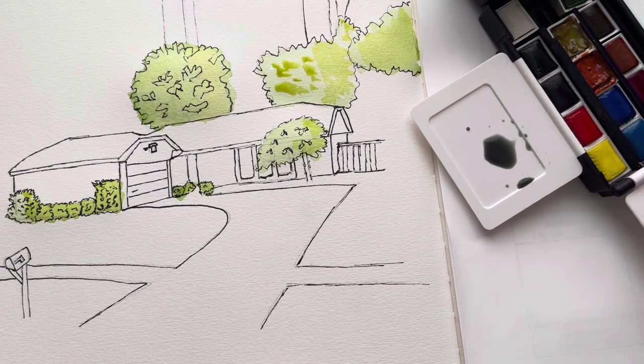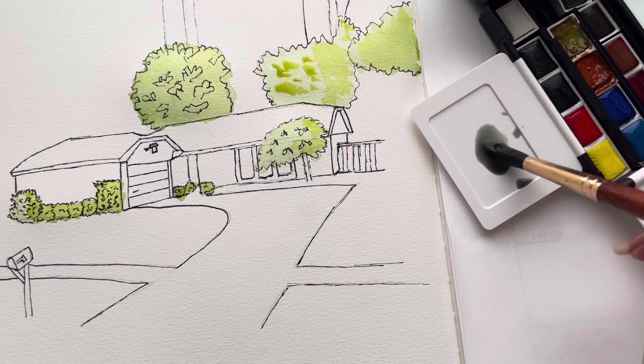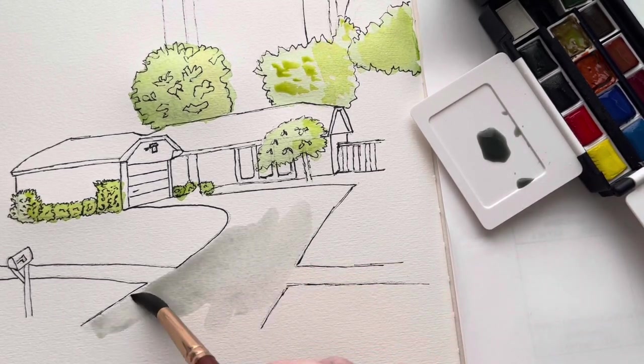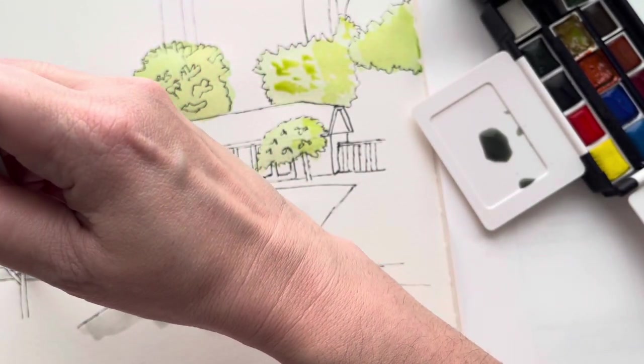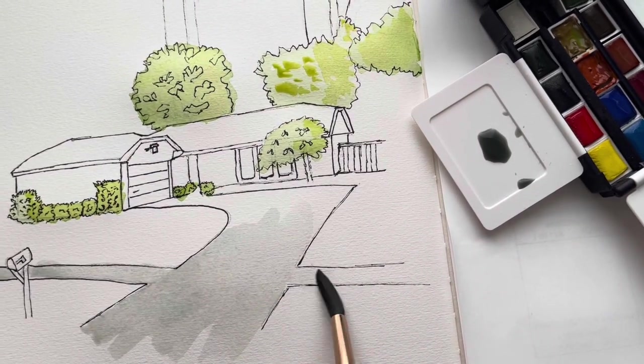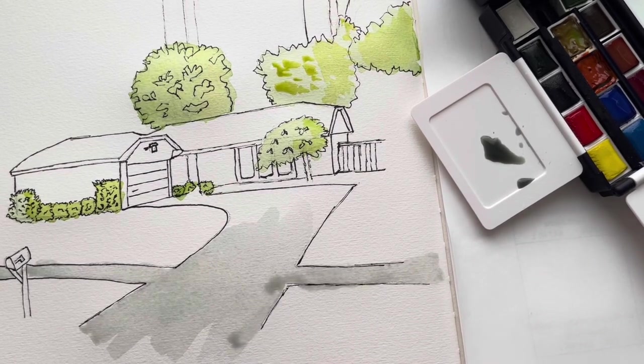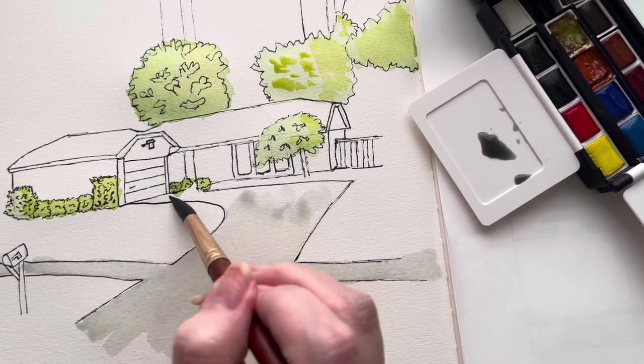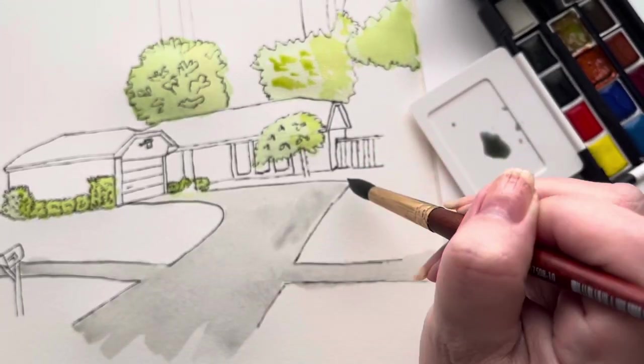I'm going to mix ultramarine and burnt sienna to get this nice gray. I'm trying to make it a very light gray as possible to color in the driveway as well as the sidewalks. This driveway was a J-swing driveway. I can't tell you how many times either my mom or other people crossed the grass right there on that curve. That was my dad's pet peeve—everyone running over his grass.